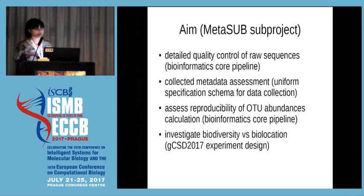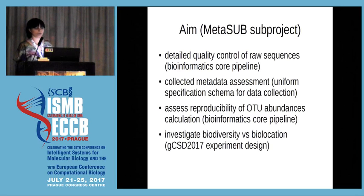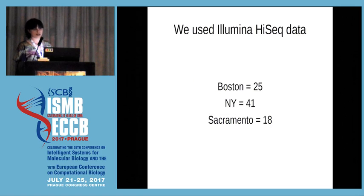Each of our aims is tightly connected with the MetaSAP subprojects, such as the bioinformatics core pipeline, because when you have a lot of cities, you really want to try to analyze them in the same way — otherwise it's really hard to compare. The second important one is about a uniform specification scheme for data collection, because based on this dataset, some cities reported measuring the temperature inside the station while others didn't specify how they did it. So it's really hard to compare when you don't have specific information on the metadata you collected while you swabbed. The third aim was to assess the reproducibility of species, and the last one was to investigate biodiversity versus bio-location. We focused on Illumina HiSeq data only.